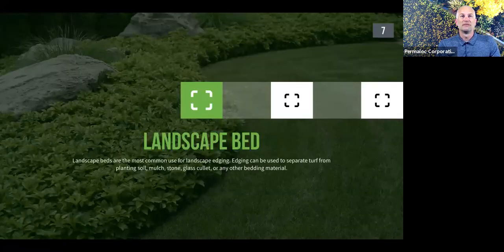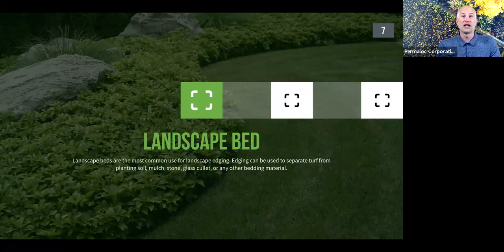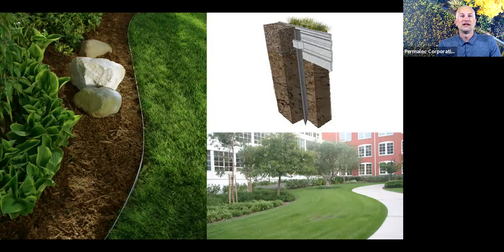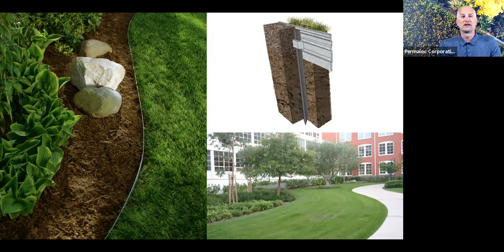First, let's take a look at landscape beds — the most recognized and popular use for landscape edging. Most people, when they think landscape edging, this is what they're thinking of. Edging can be used here to separate turf from planting soil, mulch, stone, glass cullet, or any other bedding material. As seen in this 3D rendering, a flat edging is the best choice for landscape beds, allowing the edging to flex and create the curves usually required. Stake pockets along the outside allow a stake to be driven into the soil, and the connection method between adjacent sections prevents separation at joints.